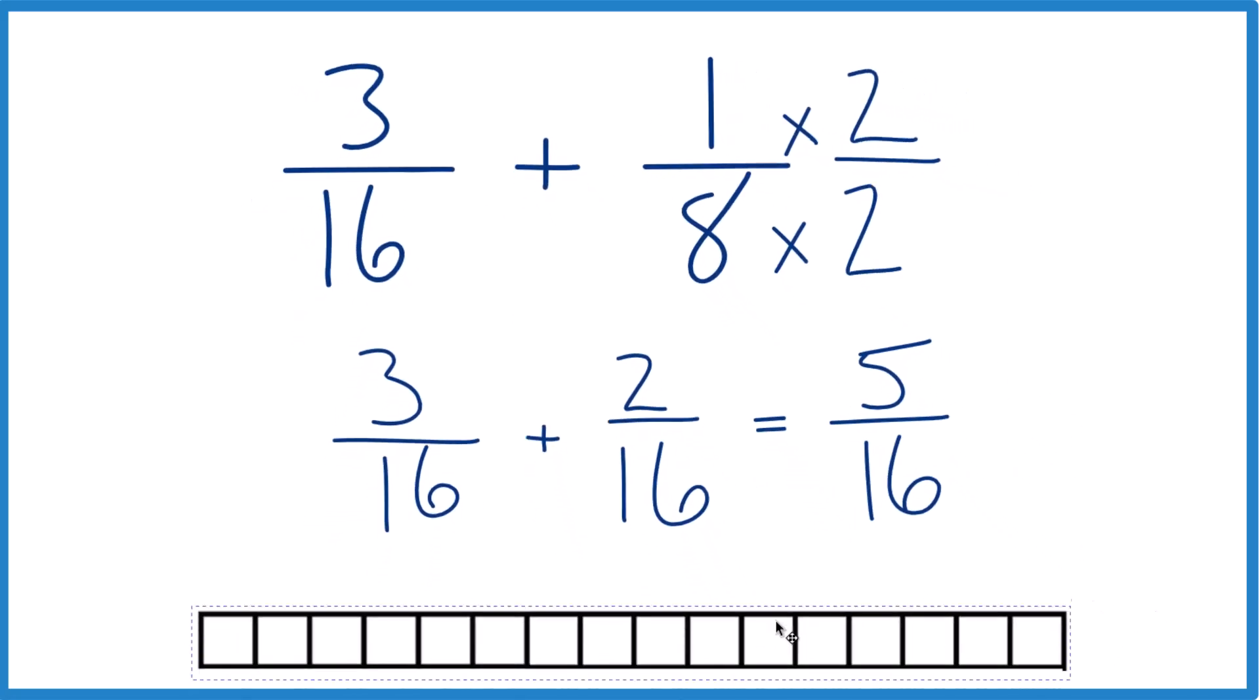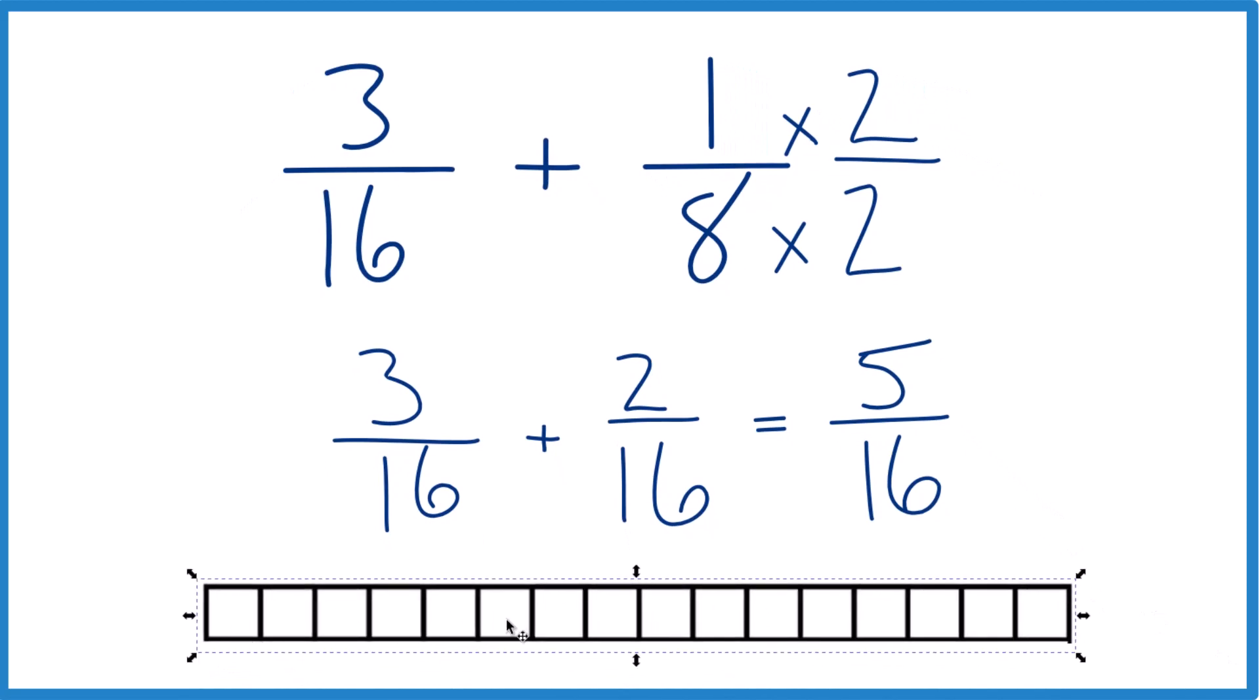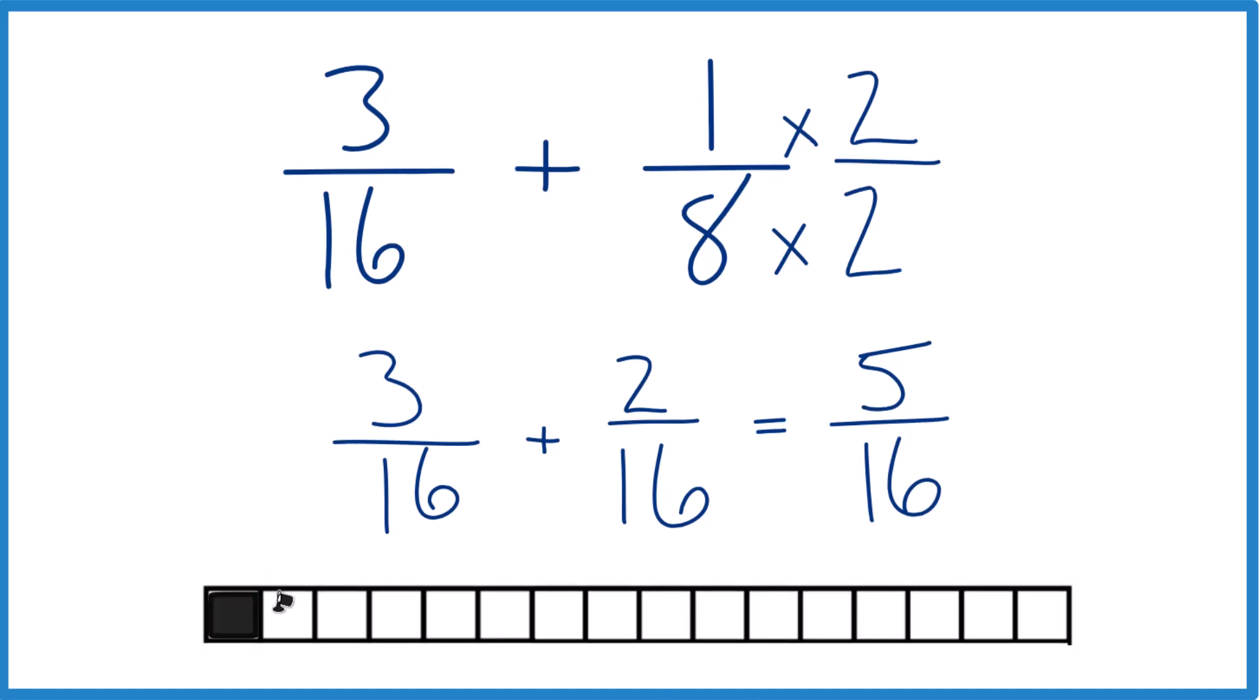And if you think about it this way, each one of these blocks here is 1/16. There's 16 of them. So let's take three of them: 1, 2, 3. And since they're just all 1/16, we have 2/16, let's add those 2/16 there. That's our 5/16. So that's why we keep this denominator the same and add the numerators.